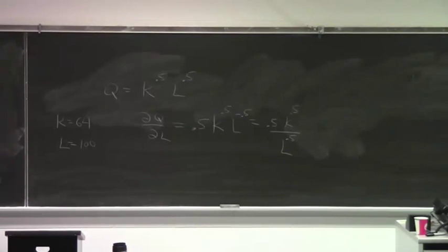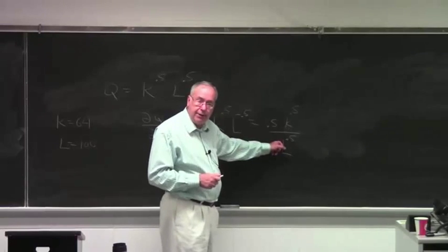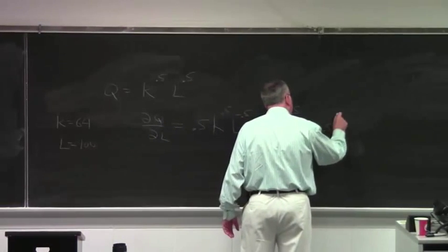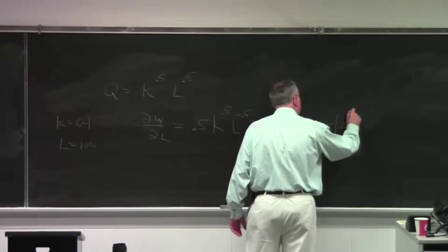And actually, we could simplify this a little bit more. Notice K and L have the same exponent. So, we could just write this as 0.5 times K over L raised to the 0.5.